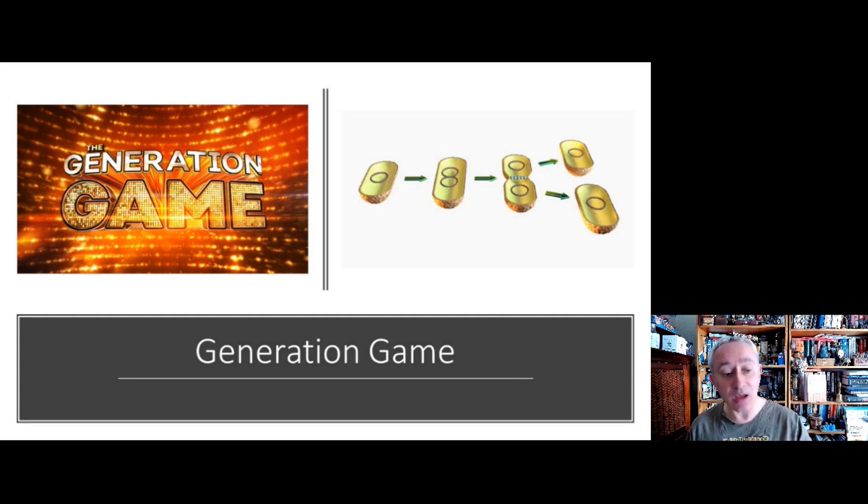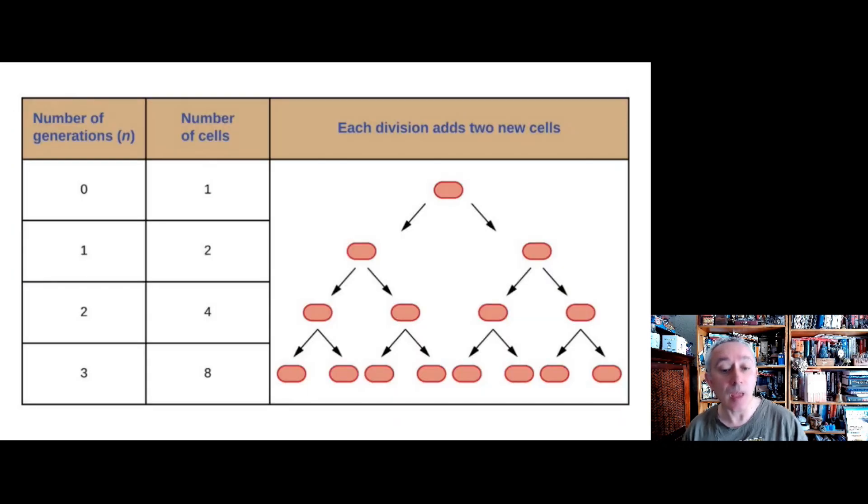Bacteria reproduce by a process called binary fission. Essentially that means they continuously create clones of themselves or genetically identical cells over a period of time until they've exhausted any of the nutrients that are available. This is a problem particularly with gram negative bacteria in wet conditions because they can fairly rapidly increase in numbers.